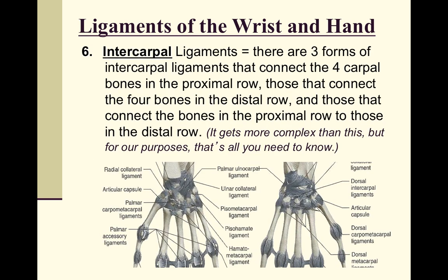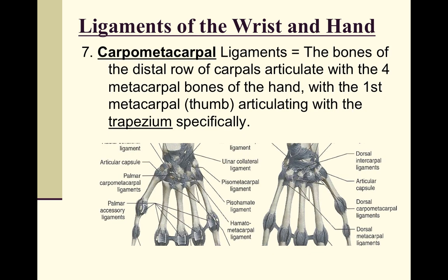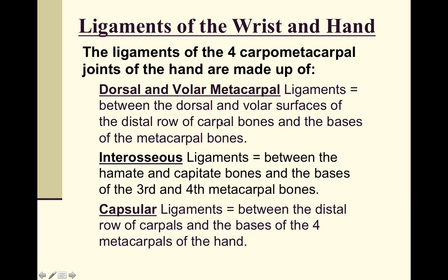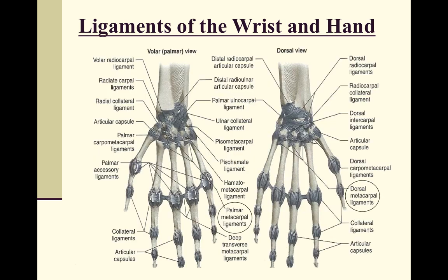Intercarpal ligaments exist between the different carpals; there are many specific names but detailed memorization is not required at this level. This specialization is why some therapists focus specifically on hand and wrist physical therapy. The carpometacarpal ligaments connect the distal row of carpals to the metacarpals — notably, each of the five metacarpals has four ligaments at this level, totaling 20 ligaments at just that one joint level.